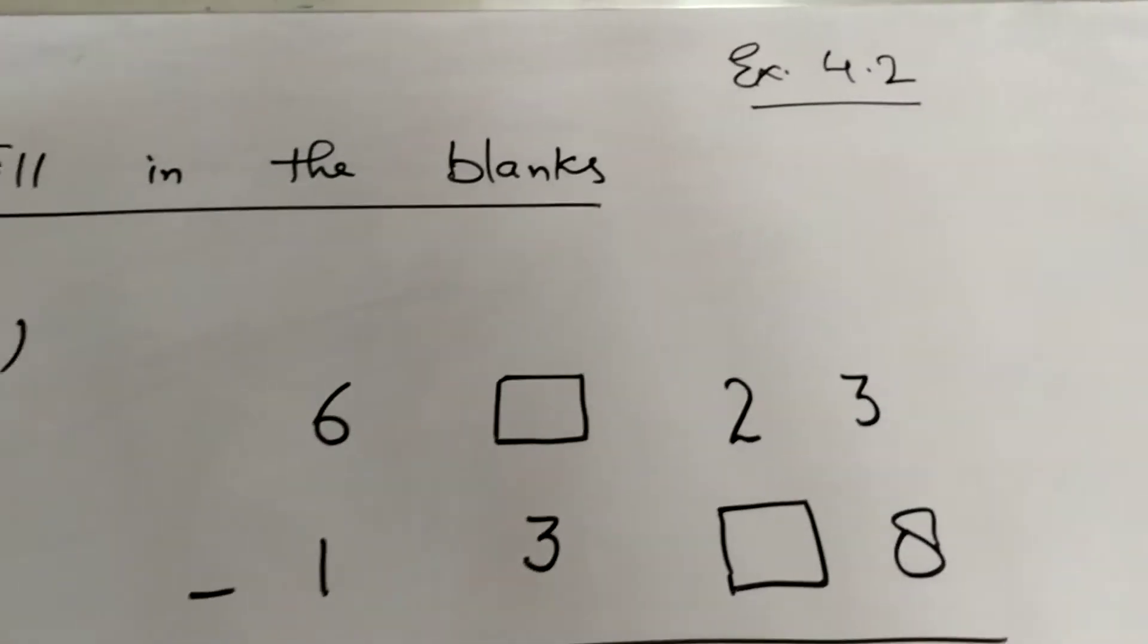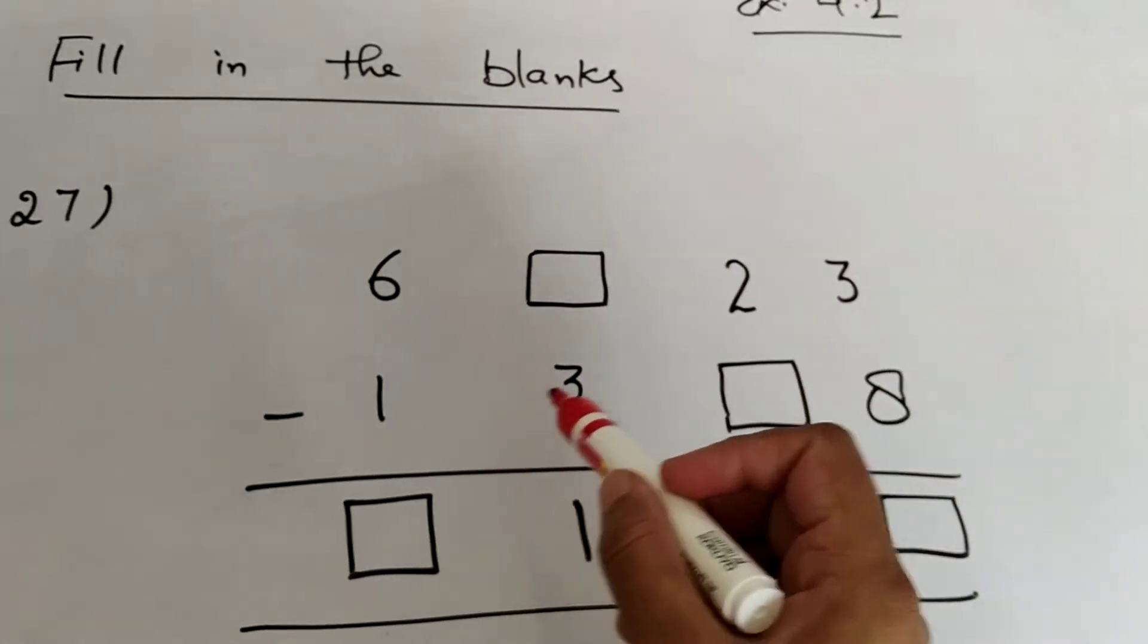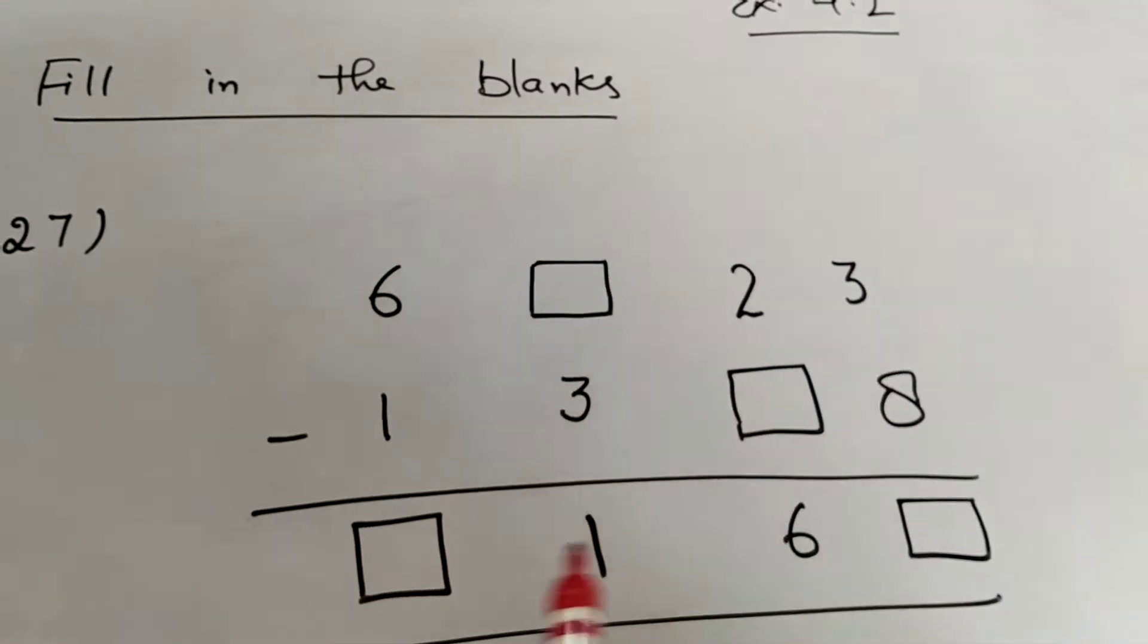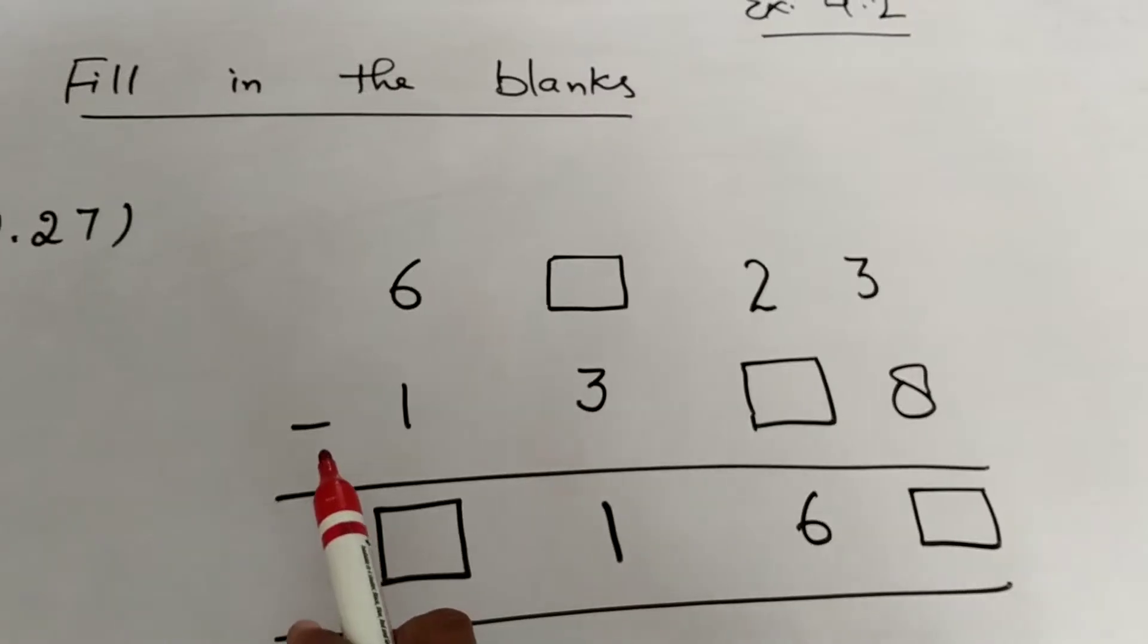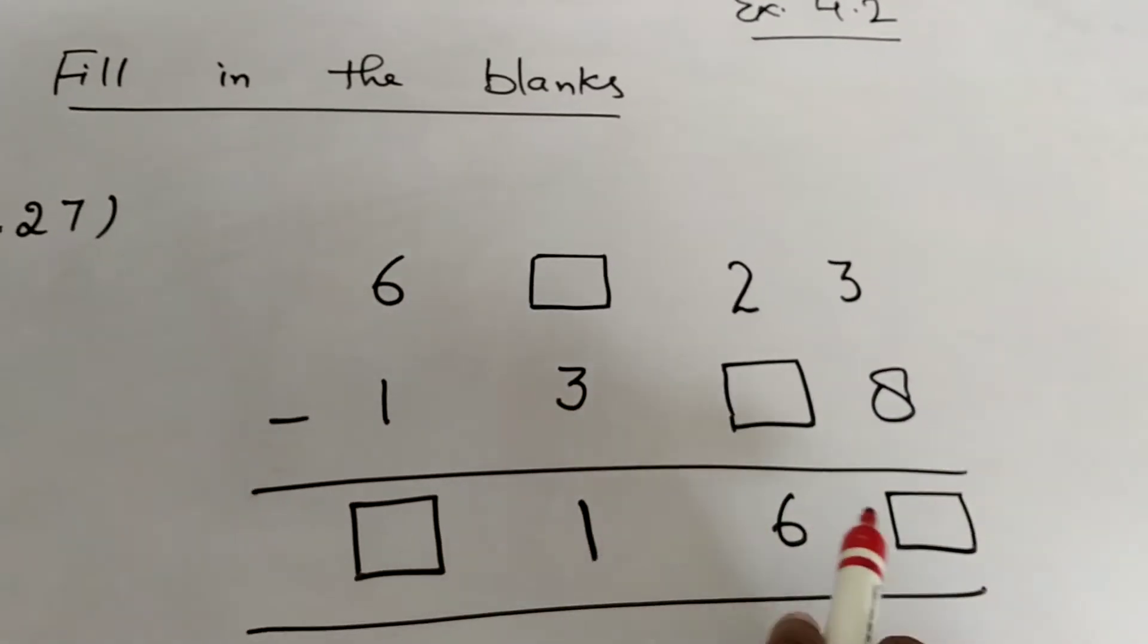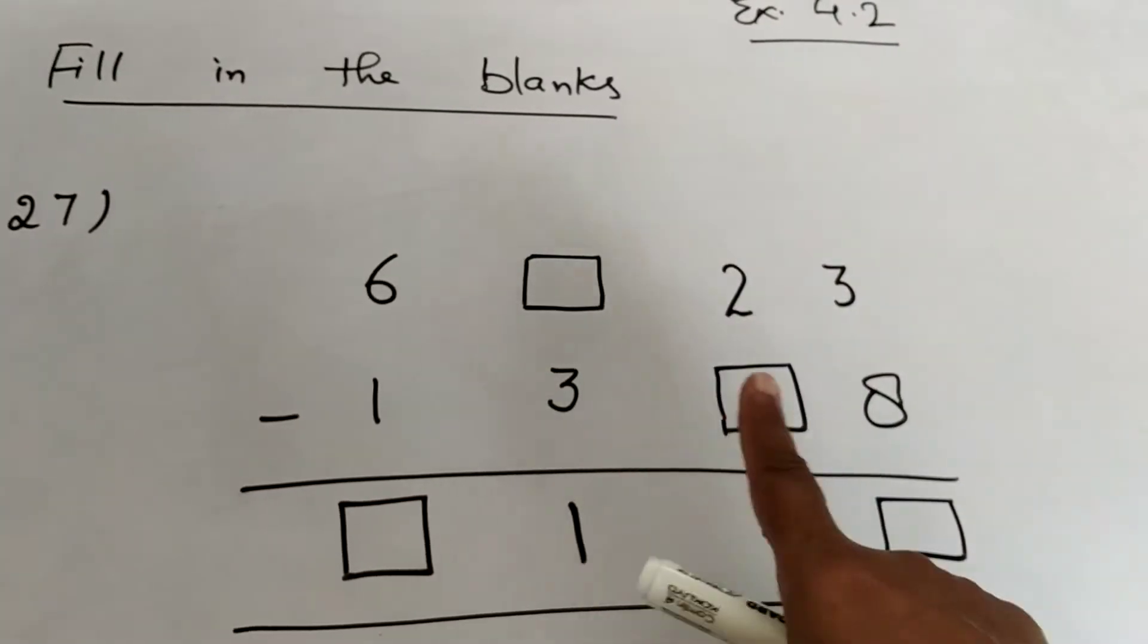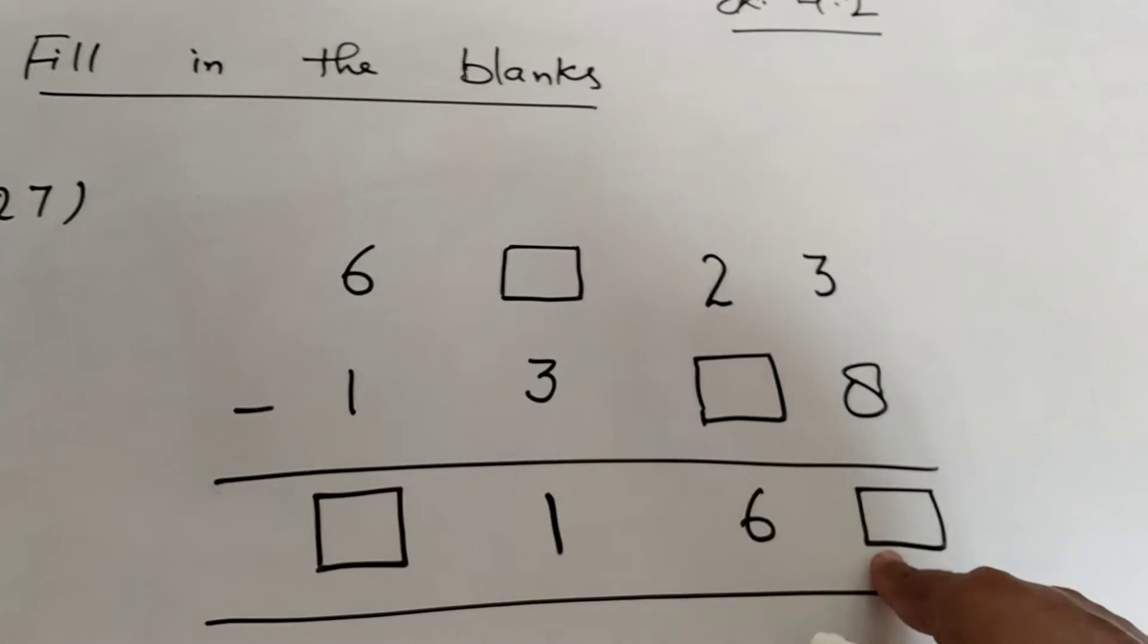Children, our next question is question number 27 which says fill in the blanks. This is a subtraction problem because the subtraction sign is there and there are some boxes which need to be filled in. We need to find the number that should be written here, the numeral that should be written here.